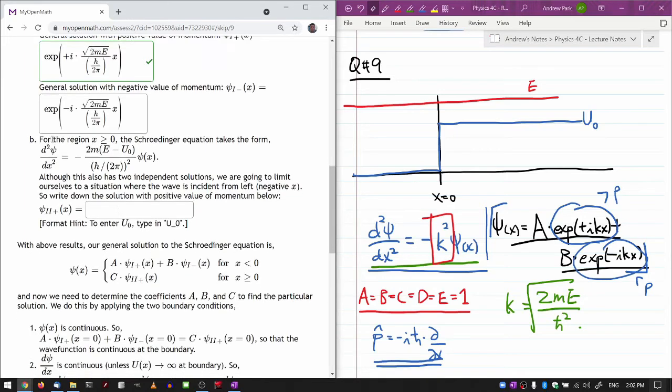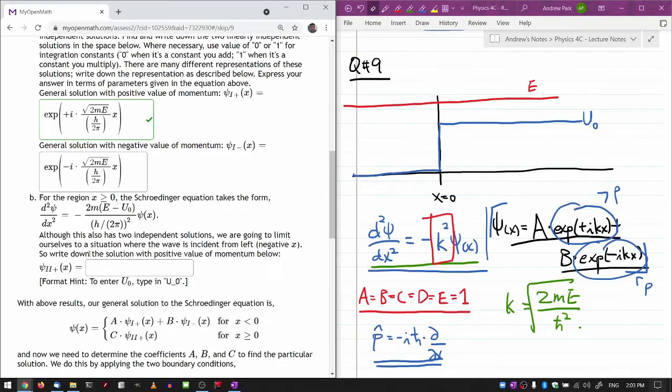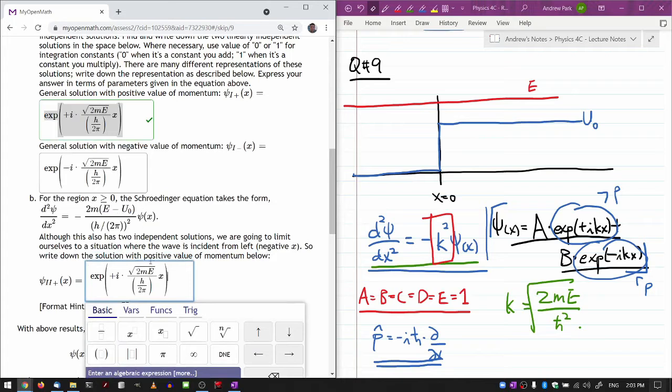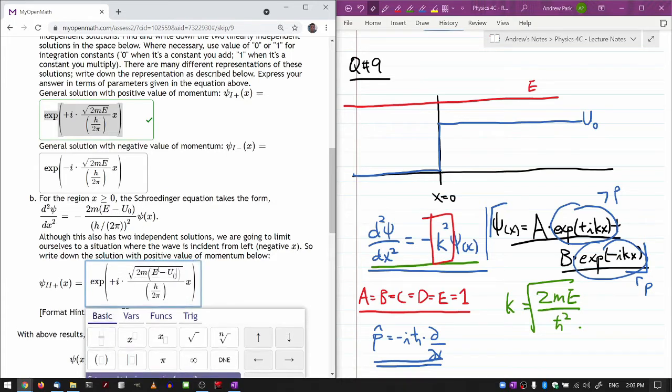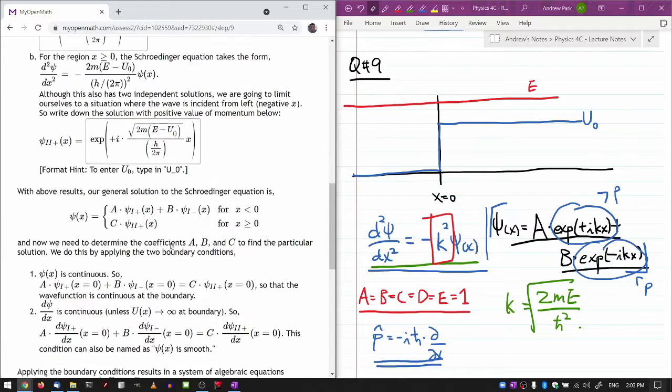I have enough information to write in the general solution with the positive value of momentum. It's exponential of plus i times the k which would be square root of 2mE. And if I wanted I can just put h bar outside of the square root, h over 2pi, and I need to multiply this by x. So this is the general solution with the positive value of momentum. And the general solution with the negative value of momentum is exactly the same except for the minus sign in front of imaginary i. I'll submit that along with the next one.